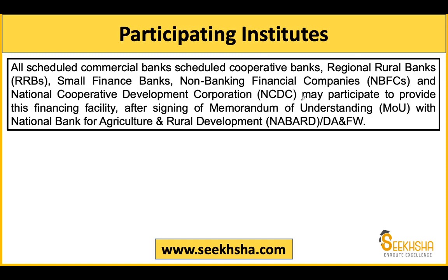Participating institutions in the Agriculture Infrastructure Fund include: all scheduled commercial banks, scheduled cooperative banks, Regional Rural Banks (RRBs) — note that RRBs do participate, which is a common confusion point — small finance banks, NBFCs, and the National Cooperative Development Corporation (NCDC). Participation is voluntary; institutions that wish to participate must first sign an MOU with NABARD and receive NABARD's approval.